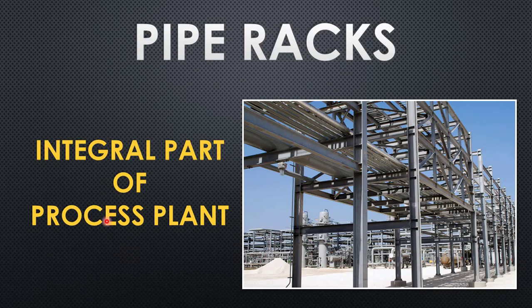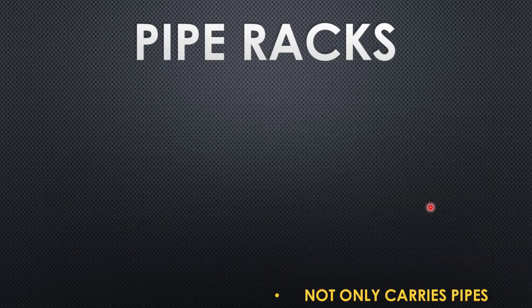Pipe rack is an integral part of a process plant. It has a structural body — which could either be steel or concrete — and it will have different levels of elevation. These different levels of elevation are meant for different purposes to carry different services, and the pipe rack runs across the unit to serve the requirements of the plant.